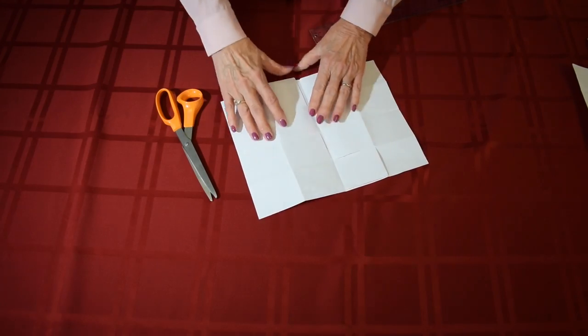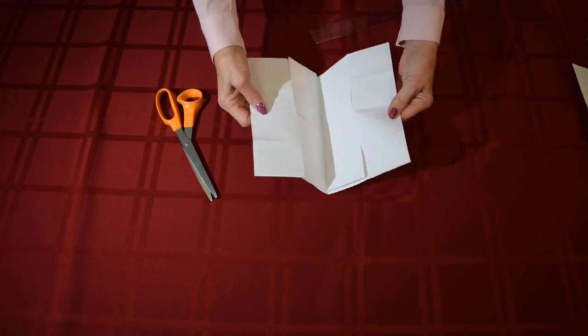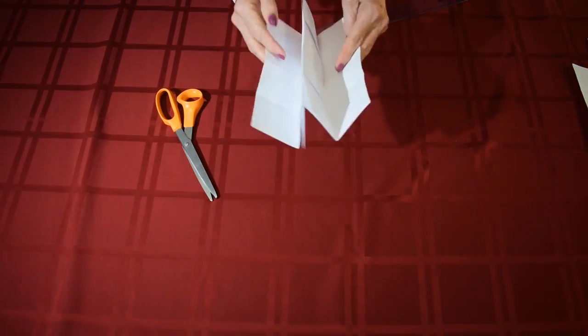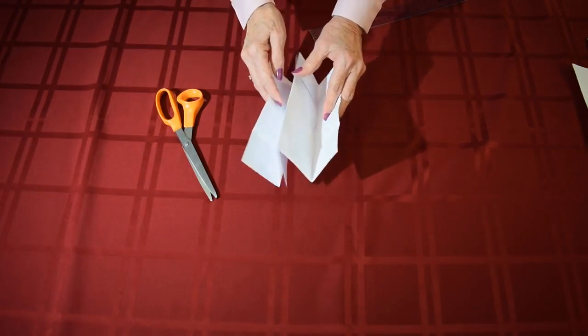Now you have your basic waffle weave. You are going to fold it back again so that you have your W on the other side.